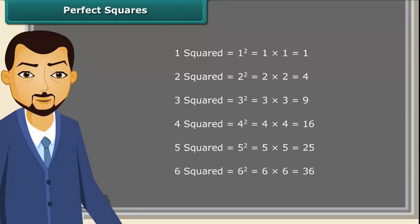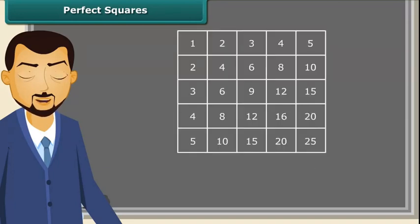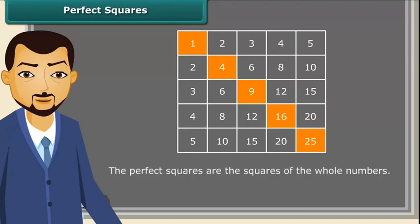We can also find squares on the multiplication table. Do you know what we call these numbers? They are called perfect squares. The perfect squares are the squares of the whole numbers.